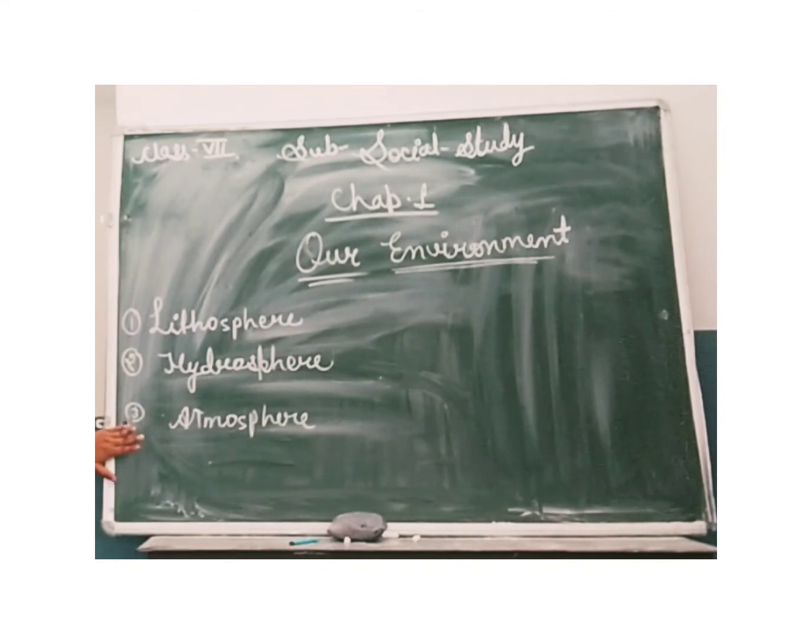So what is atmosphere? The thick layer of air surrounding the earth is called atmosphere. Atmosphere consists of gases like oxygen, nitrogen, carbon dioxide, hydrogen. So air is a mix of gases of the earth.